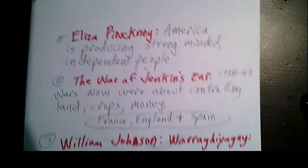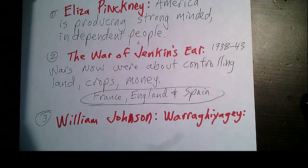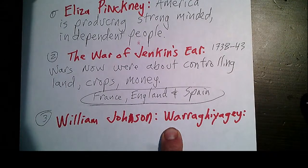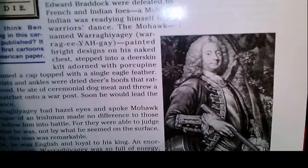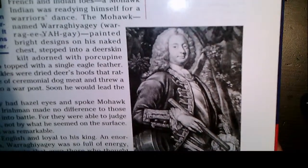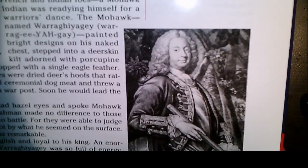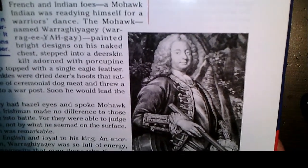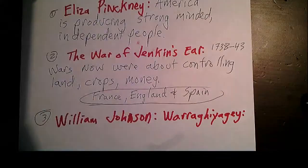We're going to learn about another amazing, colorful figure: William Johnson, also known by his Mohawk name Waragiage. Here's the man — they said he was as big as a bear. He may not look particularly burly in his businessman English portrait, but let us not digress — a most remarkable person.